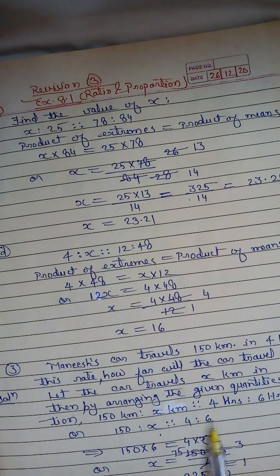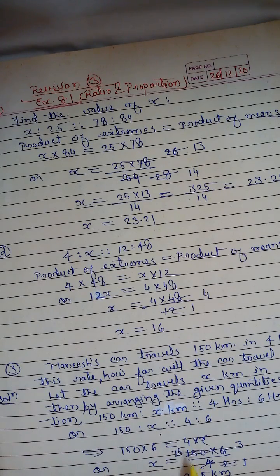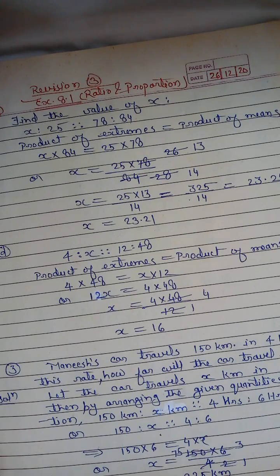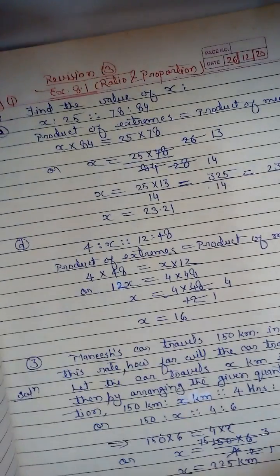Product of extremes: 150 into 6 equals product of means: 4 into x, which gives x equals 150 into 6 upon 4, giving the value of x as 225 kilometers.